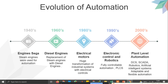It took about 20 years to go from steam engines to diesel engines, but from 1960s to 1980s there was a huge transformation. Those engines were noisy and had breakdowns, so they were replaced with electrical systems — which are cheaper, more efficient, and more controllable.